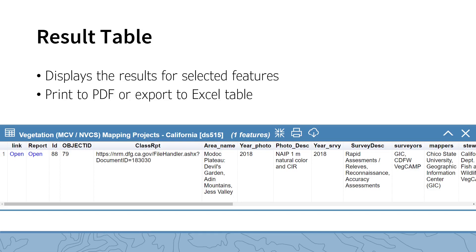The Results Table tool opens the Results table, which returns the attribute information for any selected features. The table automatically opens after a selection is made, but if closed, it can be reopened using this tool. The results can be exported to a PDF or to a table, which can be opened in programs like Excel. The table can be expanded to a larger view by pressing the up arrow adjacent to the X button in the upper right, and can be minimized by pressing this button again.